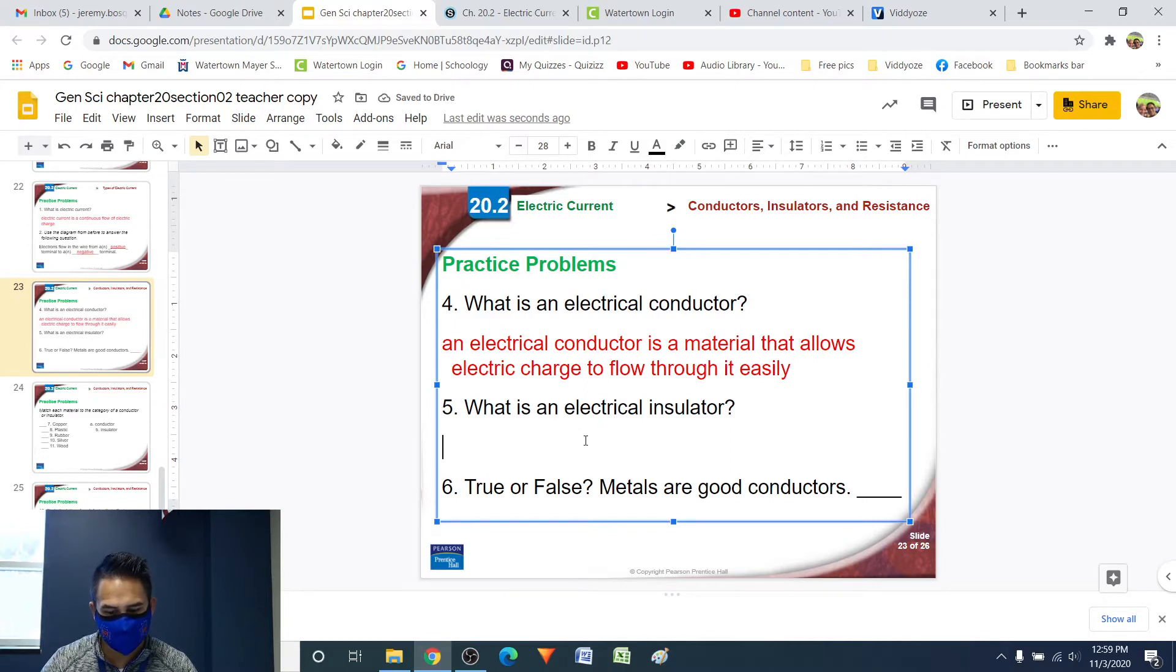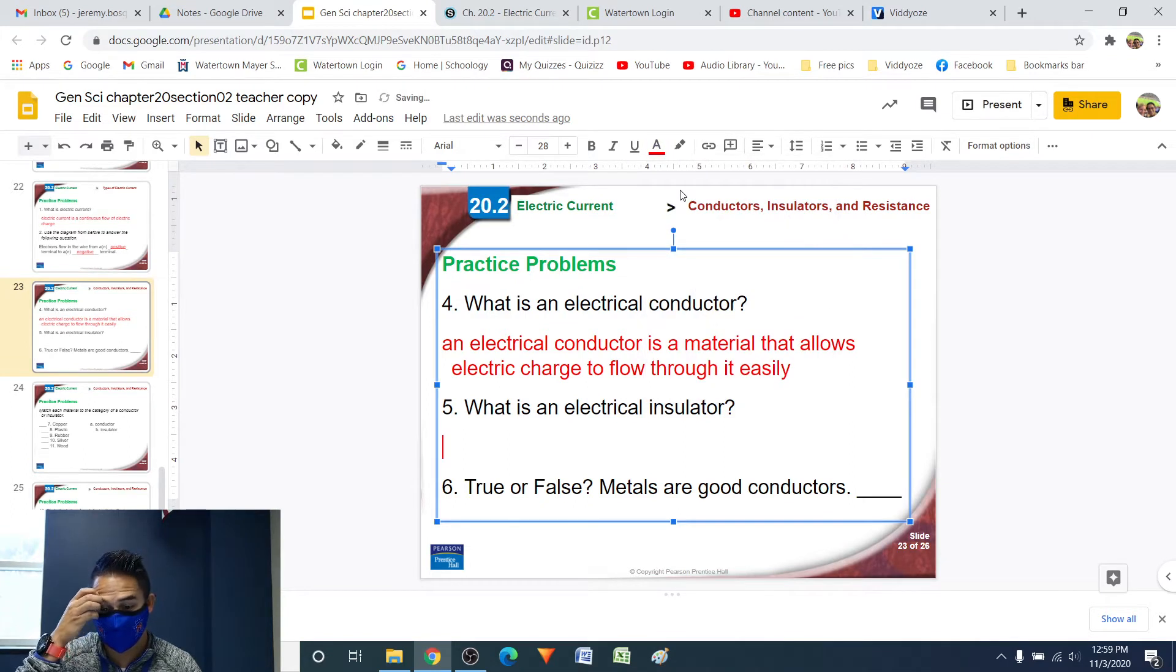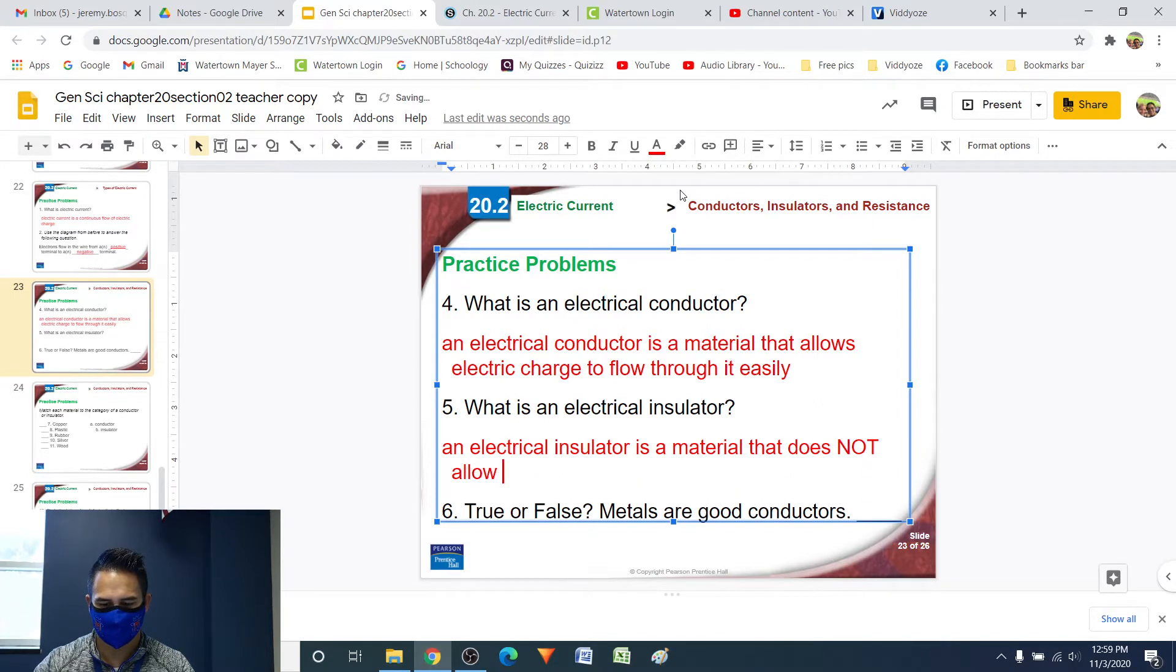Number five, what is an electrical insulator? Well, pretty much the exact opposite of an electrical conductor. So rather than a material that will allow charge to flow through it easily, we now have a material that does not allow charge to flow through it easily. So we can say an electrical insulator is a material that does not allow electric charge to flow through it easily.